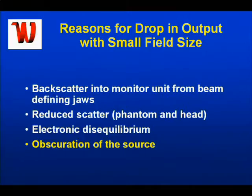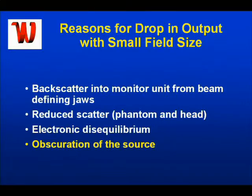What are the reasons for the drop in output with small field size? One of them is backscatter into the monitor chamber from the beam-defining jaws. There's also some reduced scatter, both from the phantom scatter and coming from the head directly. Electronic disequilibrium is also true, but really the major effect is obscuration of the source as you get down to IMRT sizes — you're actually seeing a smaller portion of the source, because the source in effect is a broad few-millimeter-sized object.